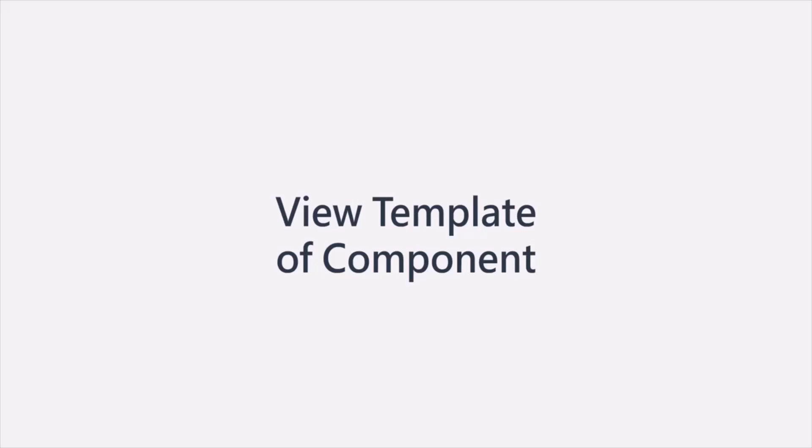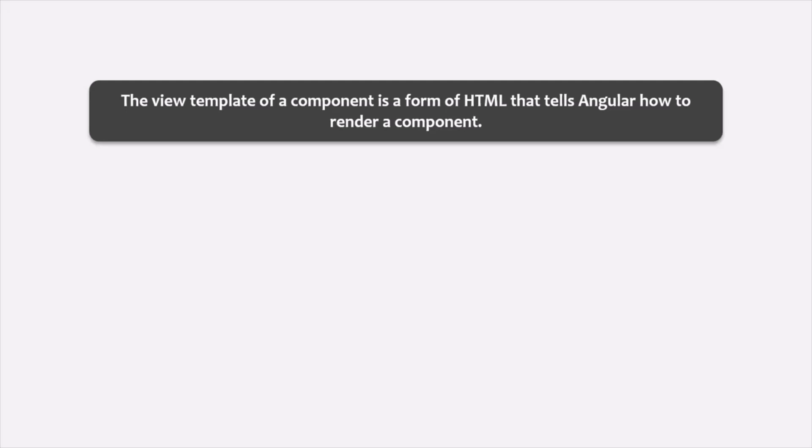In the last lecture, we learned how to create and use a component. When we create a component, in order to use it, we use its selector like an HTML element. And whenever we use the selector of a component like an HTML element, some HTML gets rendered. That HTML is called the view template of that component. The view template of a component is a form of HTML that tells Angular how to render a component.